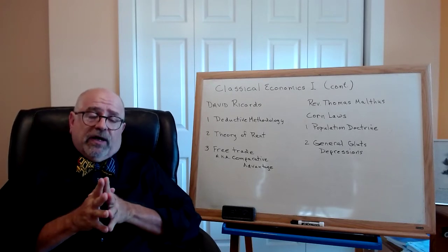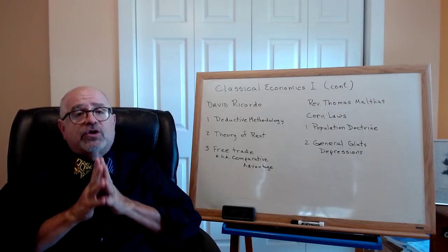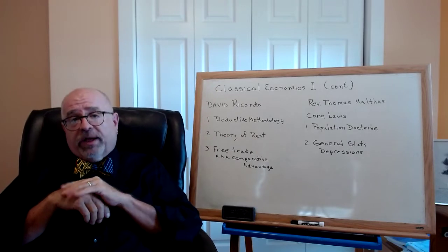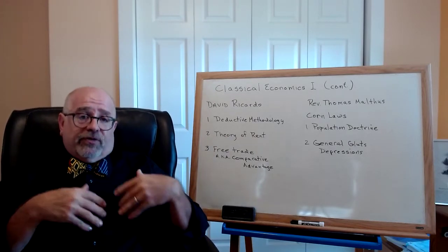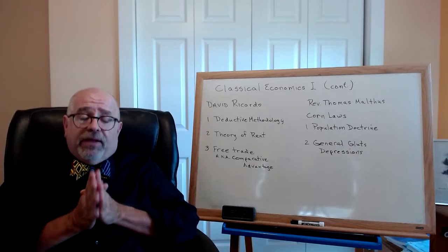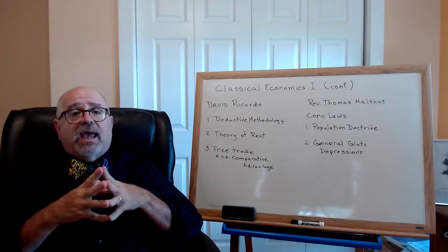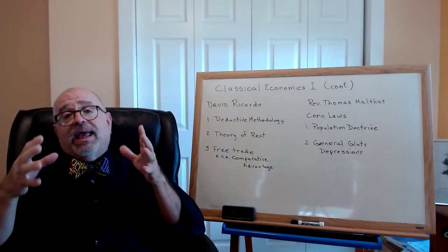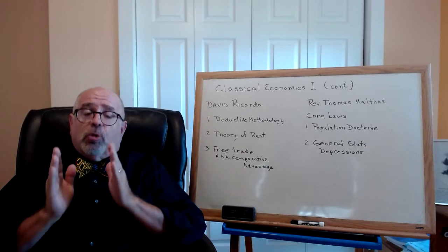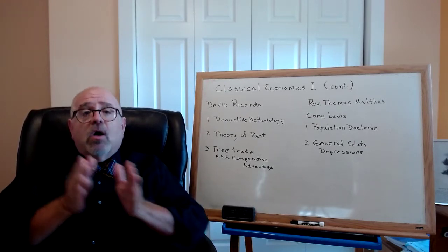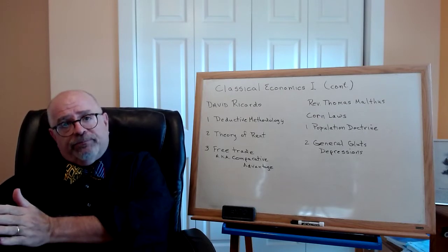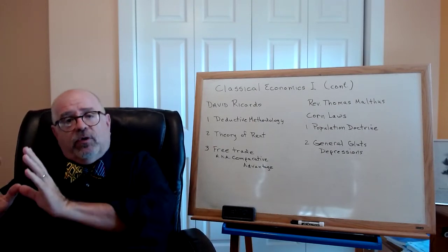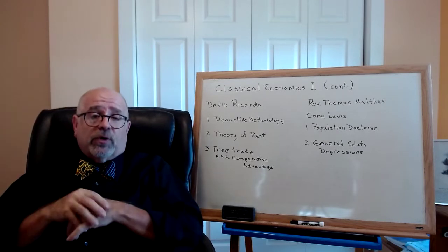David Ricardo used deductive methods to make two substantial theoretical contributions that are still important today. The first is his theory of rent, called Ricardian rent. We tend to think of rent in terms of housing or real estate, and that was the origin of this for Ricardo, but it became larger than that. An economic rent for economists is the differential paid to a superior quality input over an inferior quality input. So if you have a better input, you can demand more for it than you can if you are selling an inferior input.